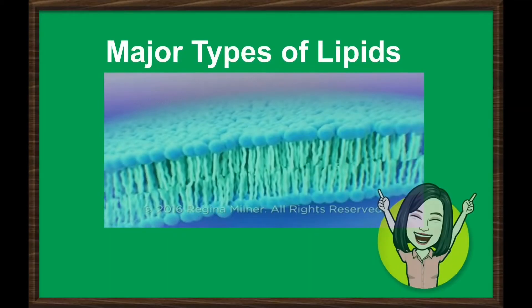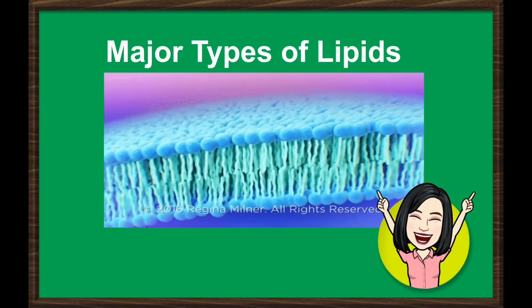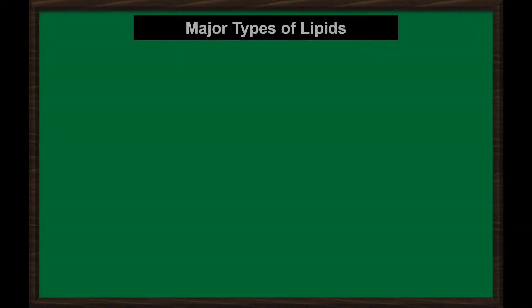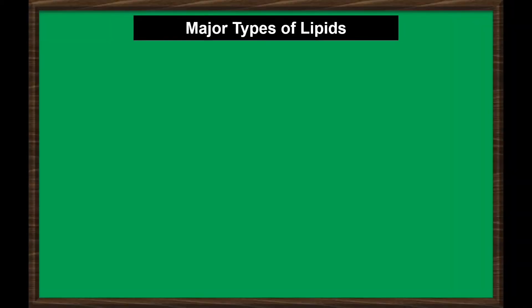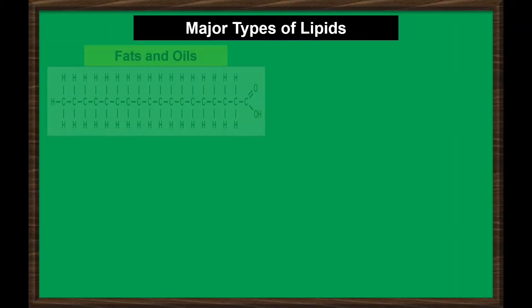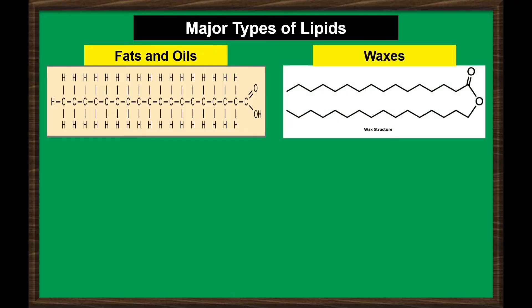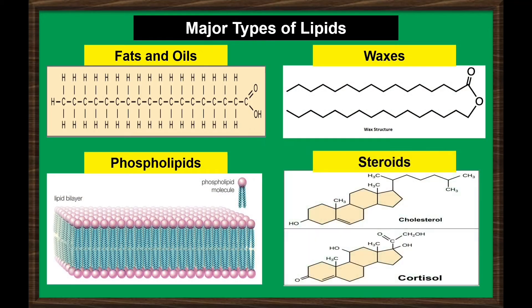Major types of lipids include fats and oils, waxes, phospholipids, and steroids. Let us learn each type of lipids.